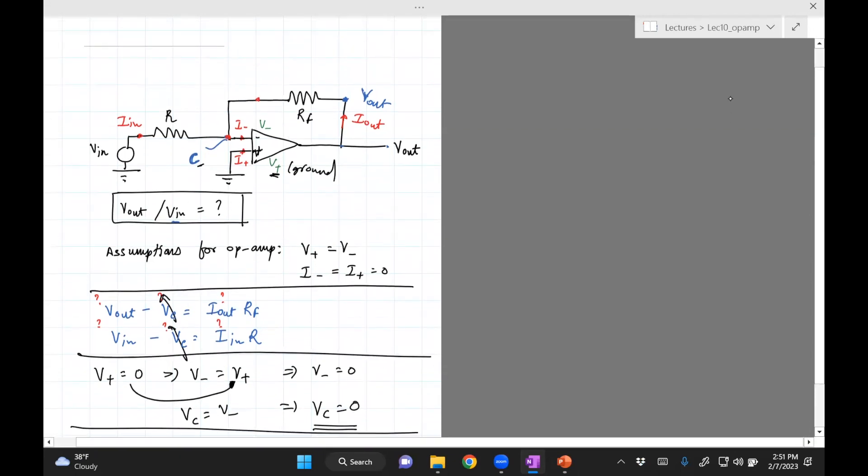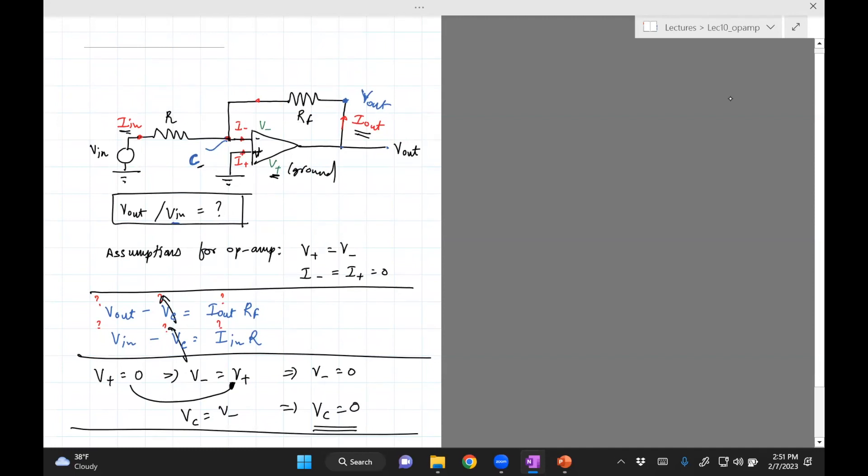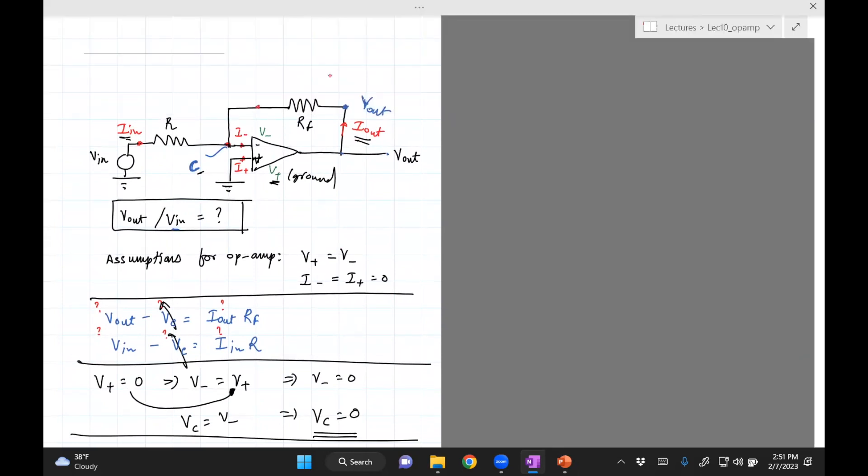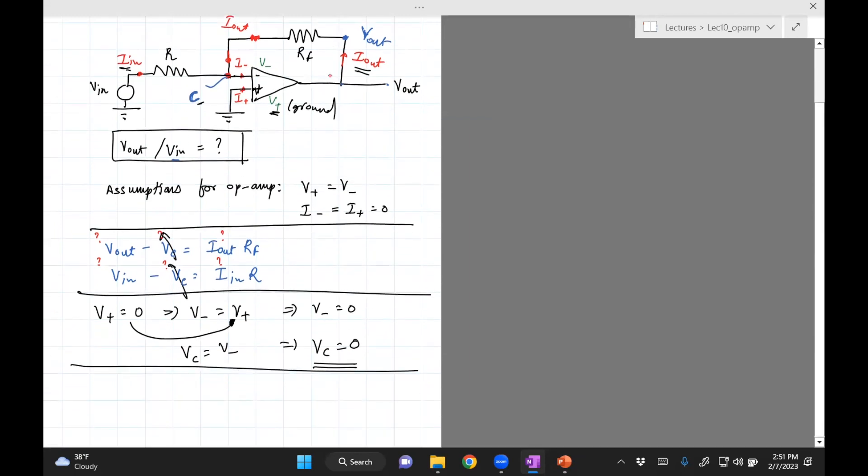So that helps me eliminate V_C from here without the equation. Now we're left with I_out and I_in. Now what we can do is use KCL. I_out goes here, it comes here, right? So I_out is going into node C. I_in is also going into node C. Maybe I can use KCL here at node C. We should have I_in, which is going inside C, and I_out, which is also going inside C, should be equal to the current coming out of C, which is I_negative. So this is KCL at C.